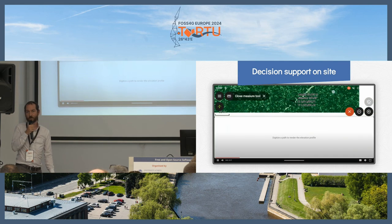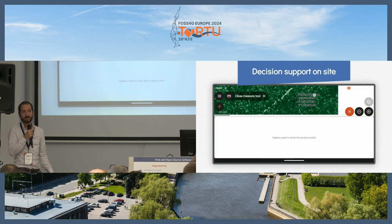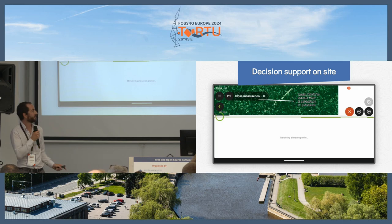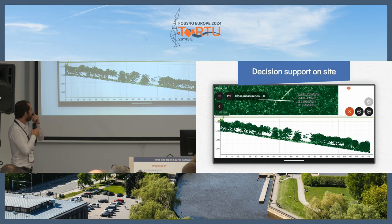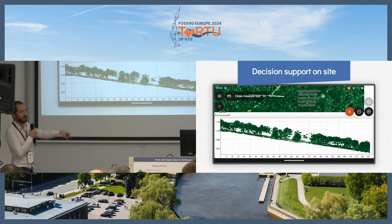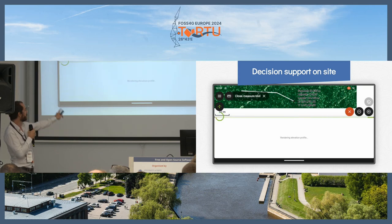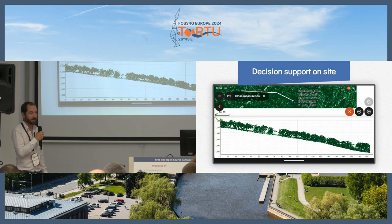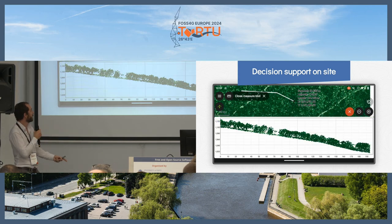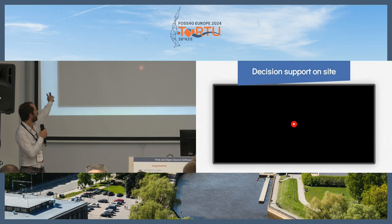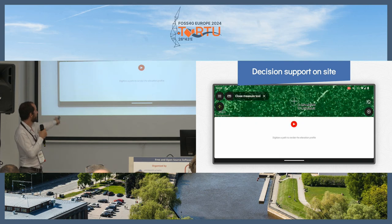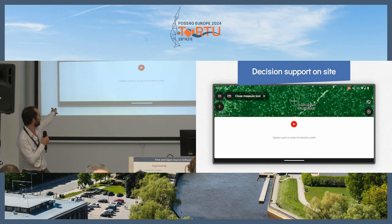It also comes with some quite advanced things. What you can do, for instance, is have point clouds directly attached. This one is a point cloud dataset that is consumed over the air as a cloud optimized point cloud. You can draw a line and then you get a profile.